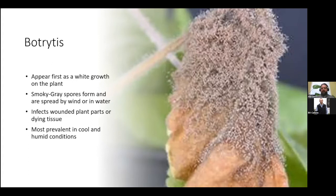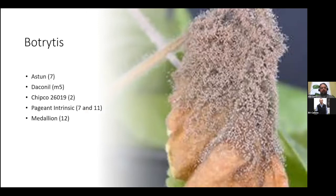Down here in South Florida, we don't see too much Botrytis — it's generally too warm at night. You need your night temperatures to be dropping below 70 degrees for Botrytis to appear. Some of the best control options for Botrytis are Astun, Daconil, Chipco, Pageant Intrinsic, and Medallion. I have the mode of action listed here as well.